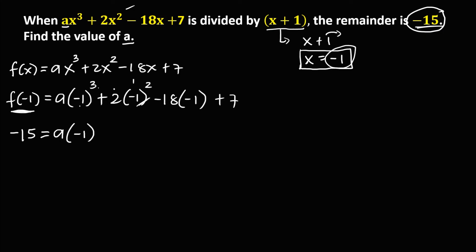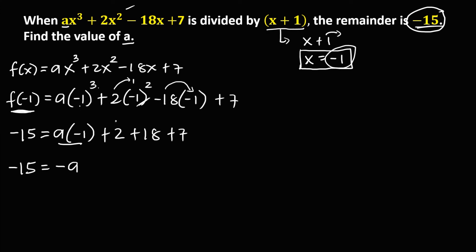Negative 1 to the power 2 is positive 1; positive 1 times 2 is positive 2. Negative 18 times negative 1 is positive 18. Bringing down the positive 7, we have negative 15 equals negative A. Then 2 plus 18 is 20, plus 7 is positive 27.